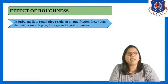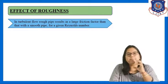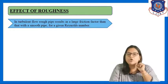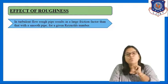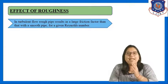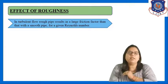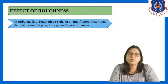For example, if we have the same Reynolds number flow, but in case 1 there is a smooth pipe and in case 2 there is a rough pipe, then in turbulent flow the rough pipe results in a larger friction factor than the smooth pipe for the same Reynolds number.